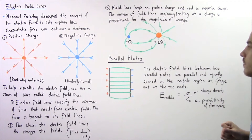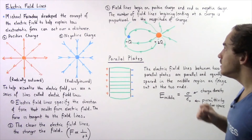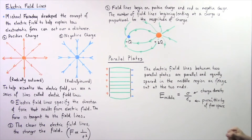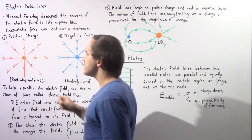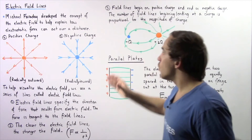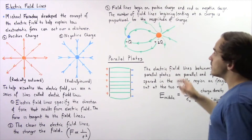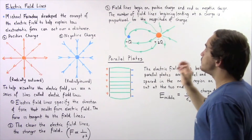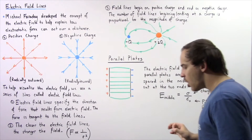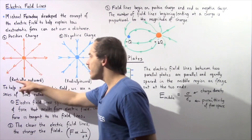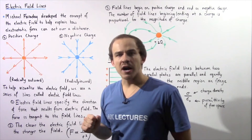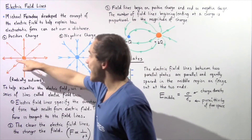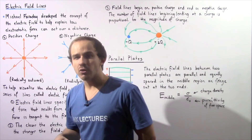Let's begin with fact number three: field lines begin on positive charges and end on negative charges. Looking at diagram A, we have a positive charge. According to this fact, field lines begin on the positive charge and extend radially outward in all possible directions, as shown in the diagram. Notice the arrows are pointing outward.